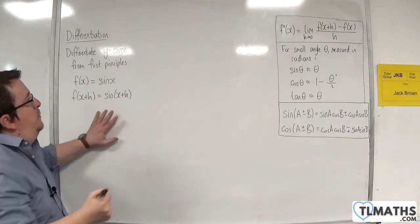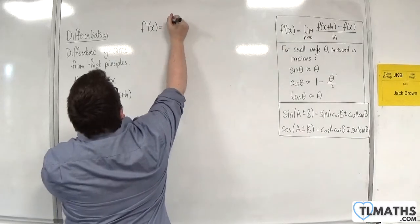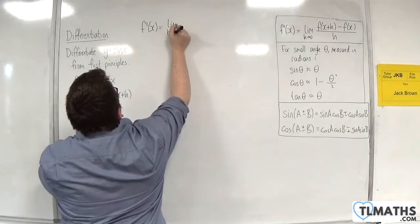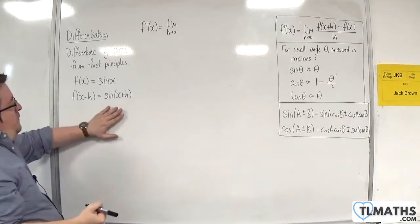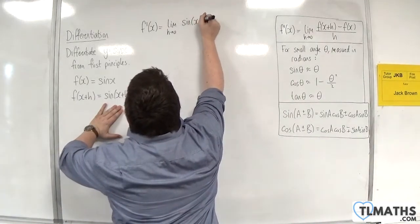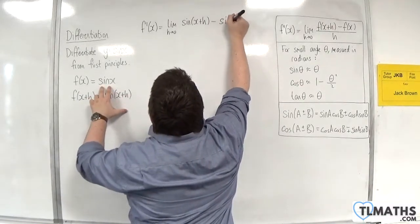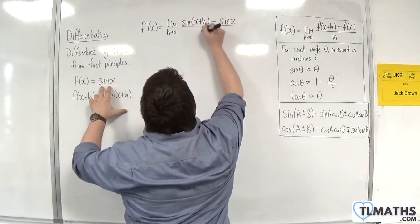So the formula f prime of x would be equal to the limit as h tends to 0 of f of x plus h, so sin of x plus h, take away sin of x all over h.